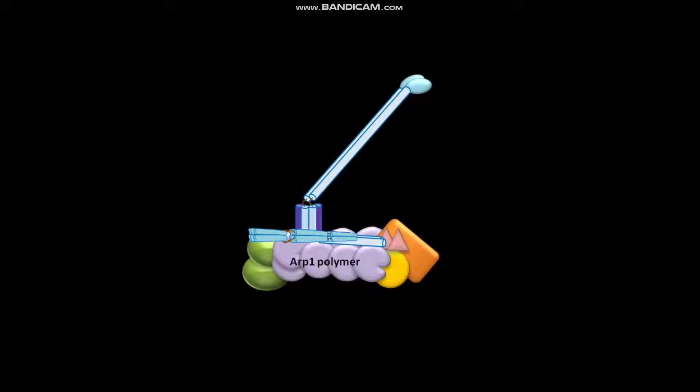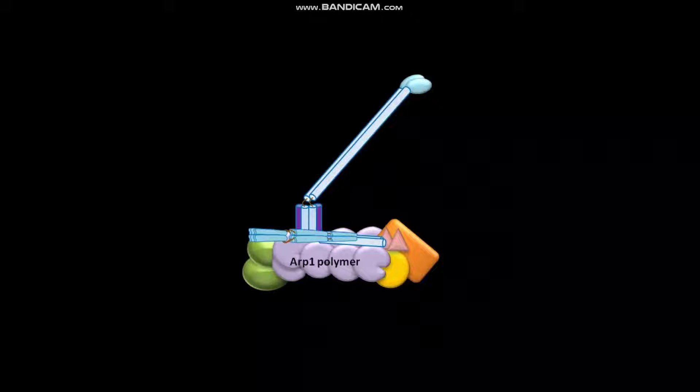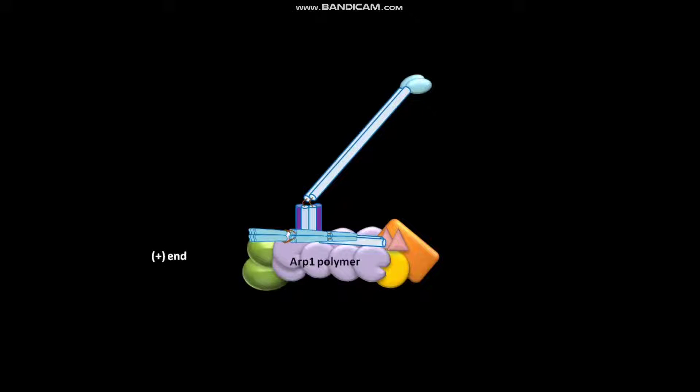This short filament or ARP1 polymer is made up of about 8 subunits of the actin related protein ARP1. The plus end of the short filament or ARP1 polymer is capped by cap Z protein.